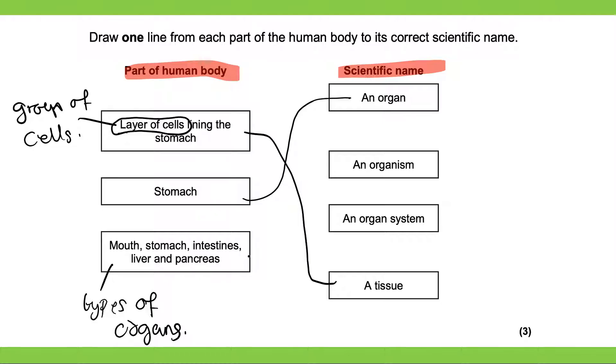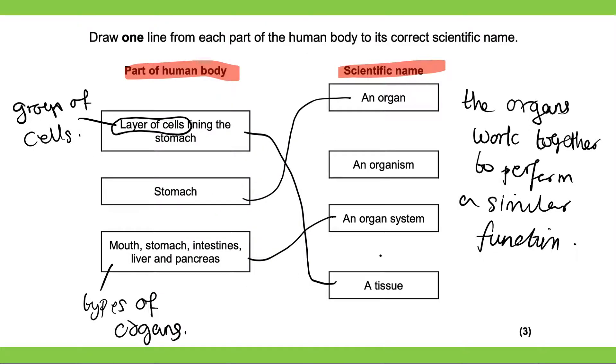And these different types of organs, they work together to perform a similar function. So this one would be an organ system. And the organs work together to perform a similar function. And having those pointed to the correct places will get you three marks for the question.